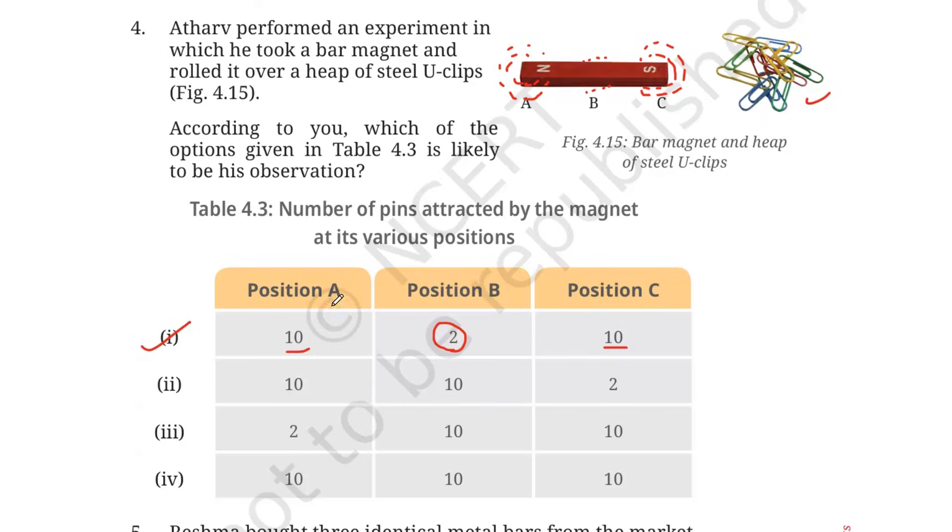You see in the first option, position B has 2 clips, position A and C has 10 clips. So our first option is the correct option. You can see the other options: position A has 10, position B has 10, position C has 2 - is it possible? No. Again, A has 2, B has 10, position C has 10 - is it possible? No. All of them has 10 - is it possible? No. Maximum will be at the poles and minimum will be at the center. So the correct answer is 1.